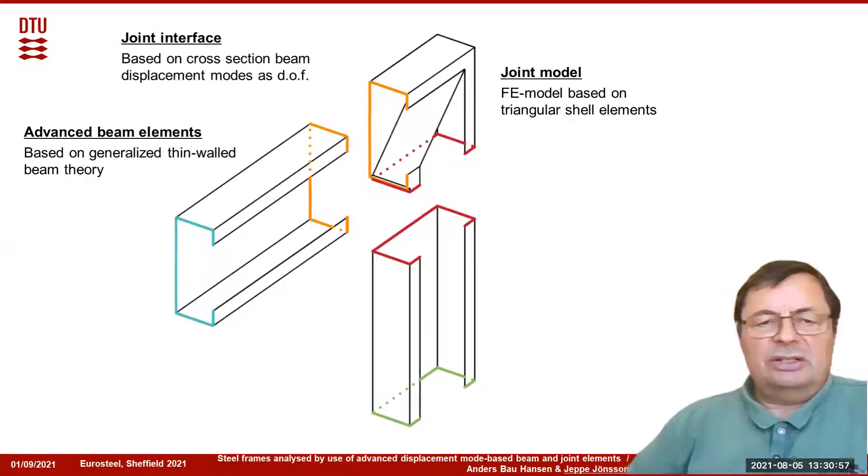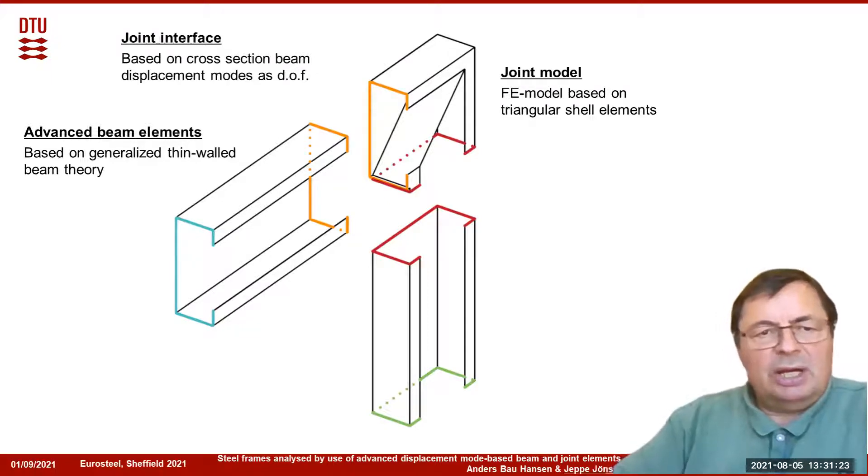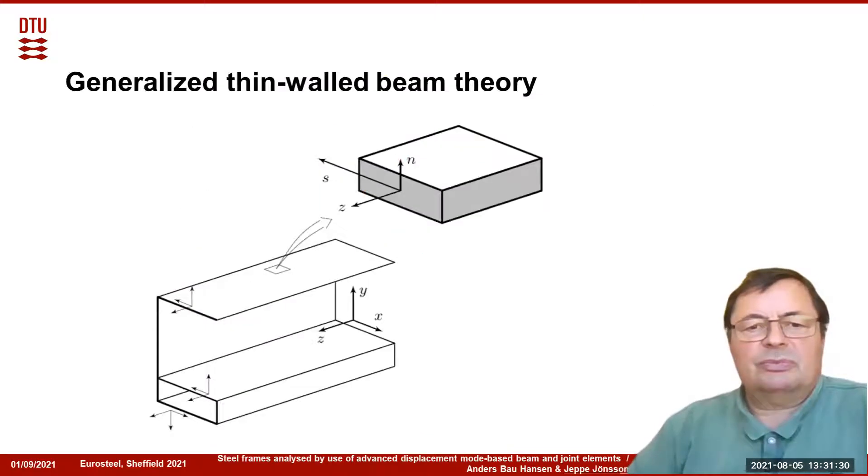The basic idea is to use advanced beam elements for the beam parts, and then make a joint interface to a model of the joint. The joint model is a finite element based model where we use triangle elements. The advanced beam elements are based on generalized thin-walled beam theory, and we are able to include distortion and warping in these elements.